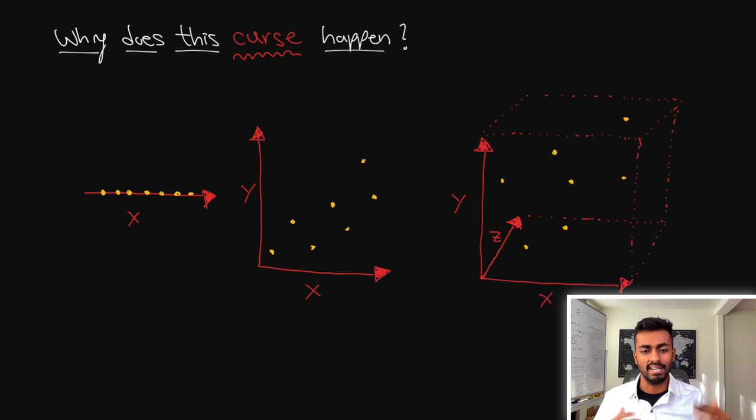Why exactly though does this happen? Well let's try to look at points in one dimensional space. We have seven points that are lined up on this x-axis and they're relatively pretty close to each other. Distances aren't really that high.